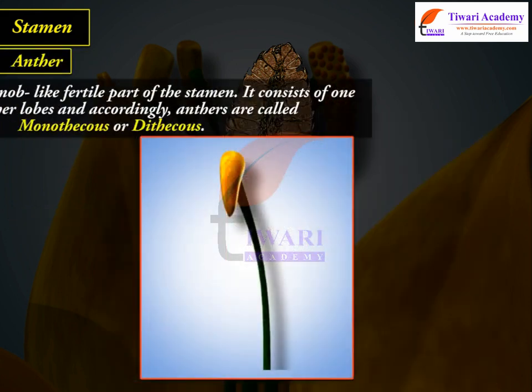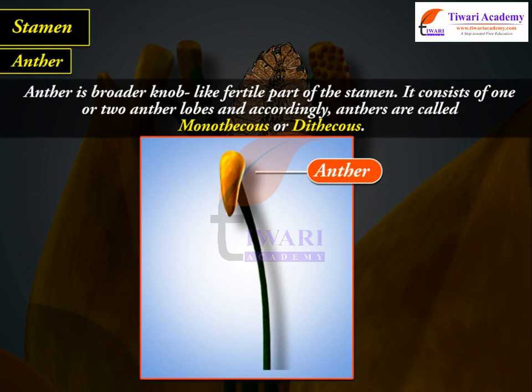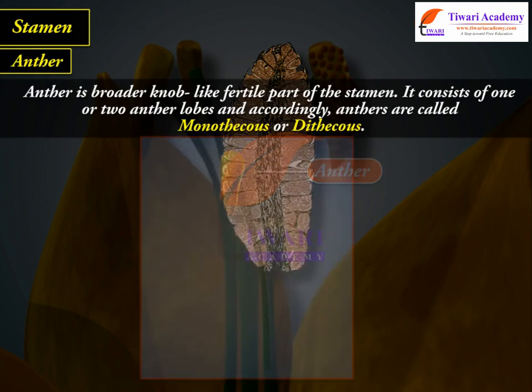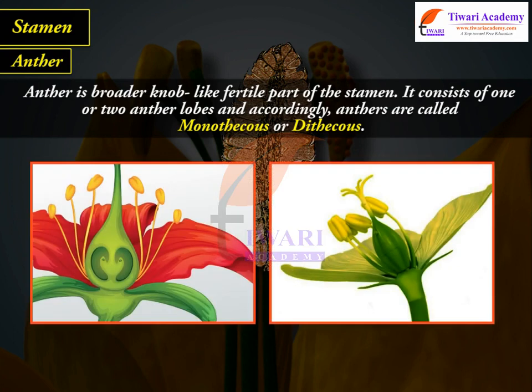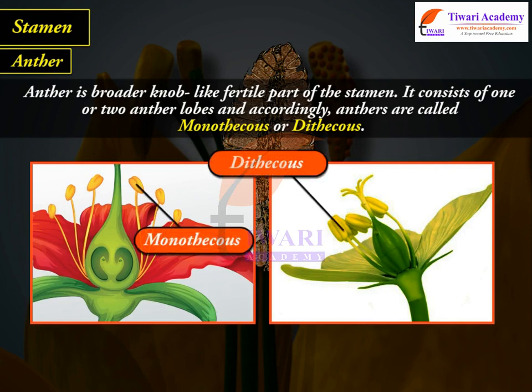Anther is the broader, knob-like fertile part of the stamen. It consists of one or two anther lobes, and accordingly anthers are called monothecous or dithecous.